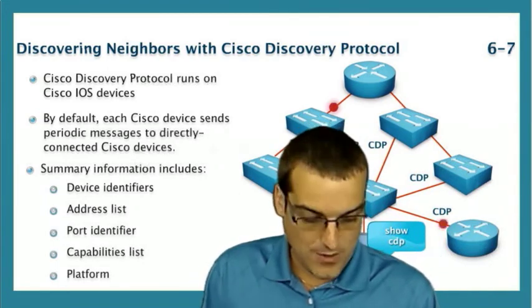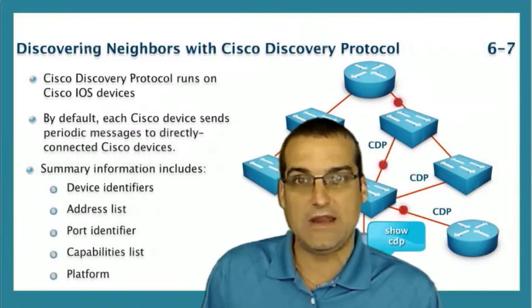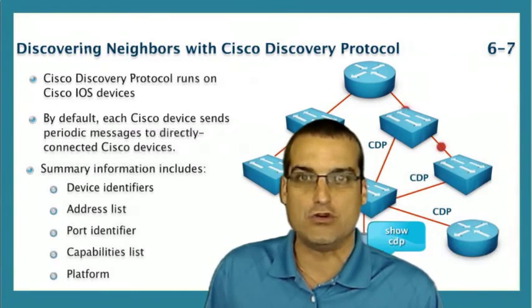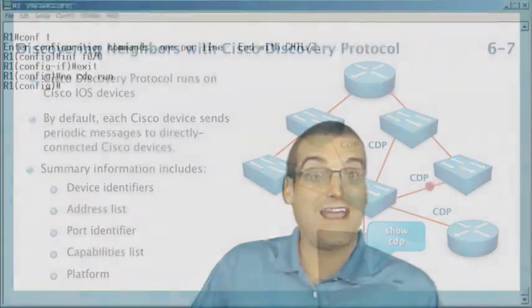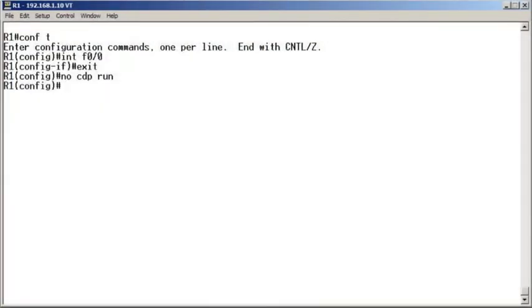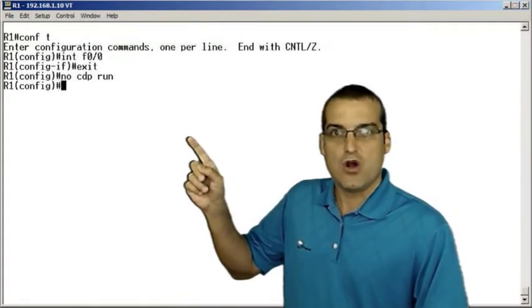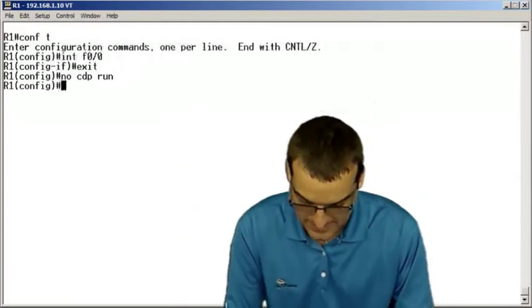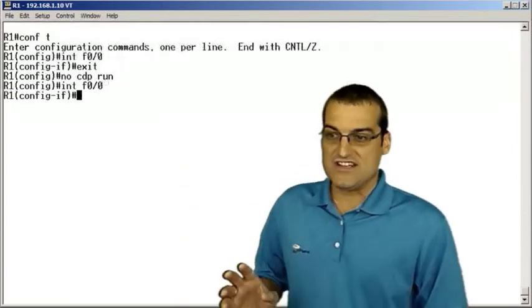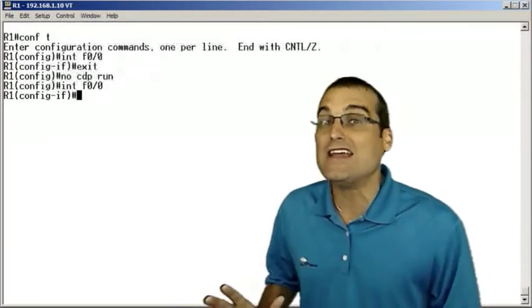So let's take a look at how we can trim CDP. We commonly refer to it as that. We trim it off either the device entirely, or we just trim it off an interface. Notice here I'm in global configuration mode. In global configuration mode, we can say 'no CDP run'. That'll turn it off on the device in entirety.